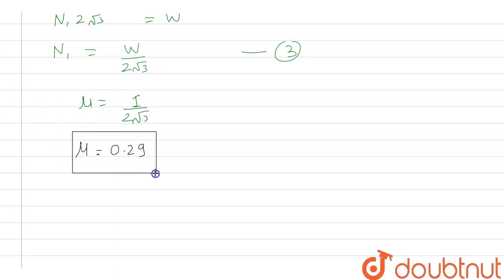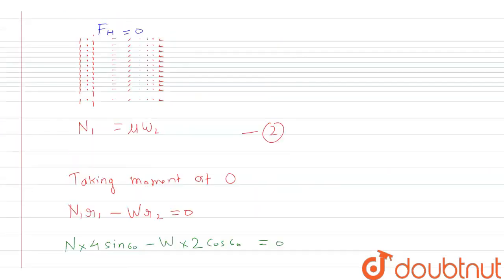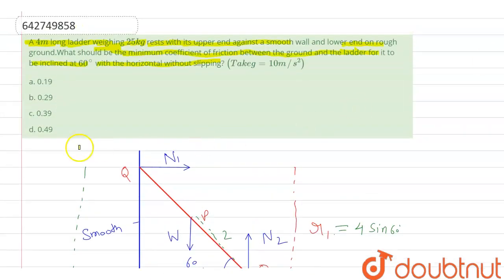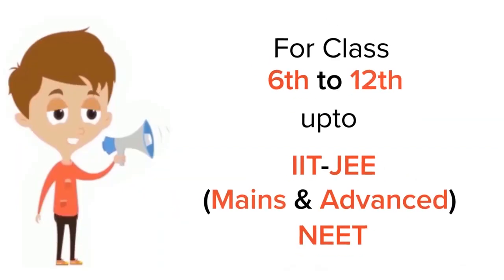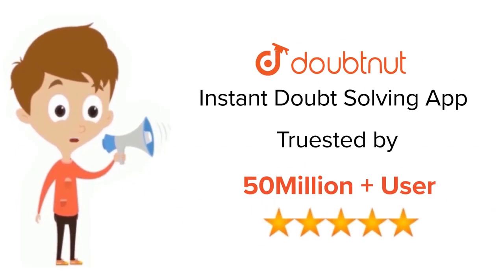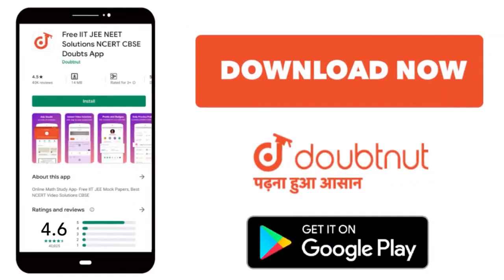The value of mu comes out to be approximately 0.29. Checking against the options, option 2 is the matching answer. This was the solution to this question. Thank you for watching. For class 6 to 12, IIT JEE, and NEET level problems, trusted by more than 5 crore students, download DoubtNut today.